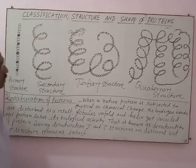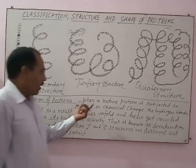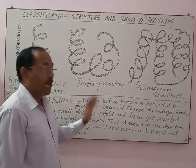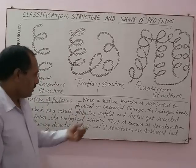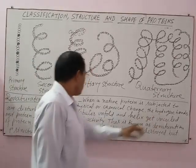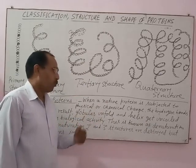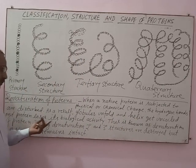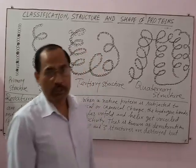The last topic is denaturation of protein. When a native protein is subjected to a physical or chemical change — physical change meaning temperature change, and chemical change meaning pH change — the hydrogen bonds are disturbed. As a result, globules unfold, the helix gets uncoiled, and the protein loses its biological activity. This process is known as denaturation of protein.